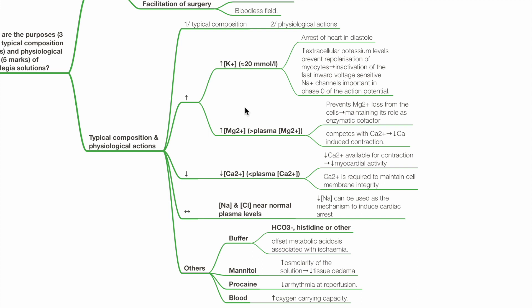Sodium and chloride concentrations are near normal plasma levels. Low sodium concentrations can be used as a mechanism to induce cardiac arrest. Other ingredients include buffers, such as bicarbonate, histidine or others. This offsets metabolic acidosis associated with ischemia.